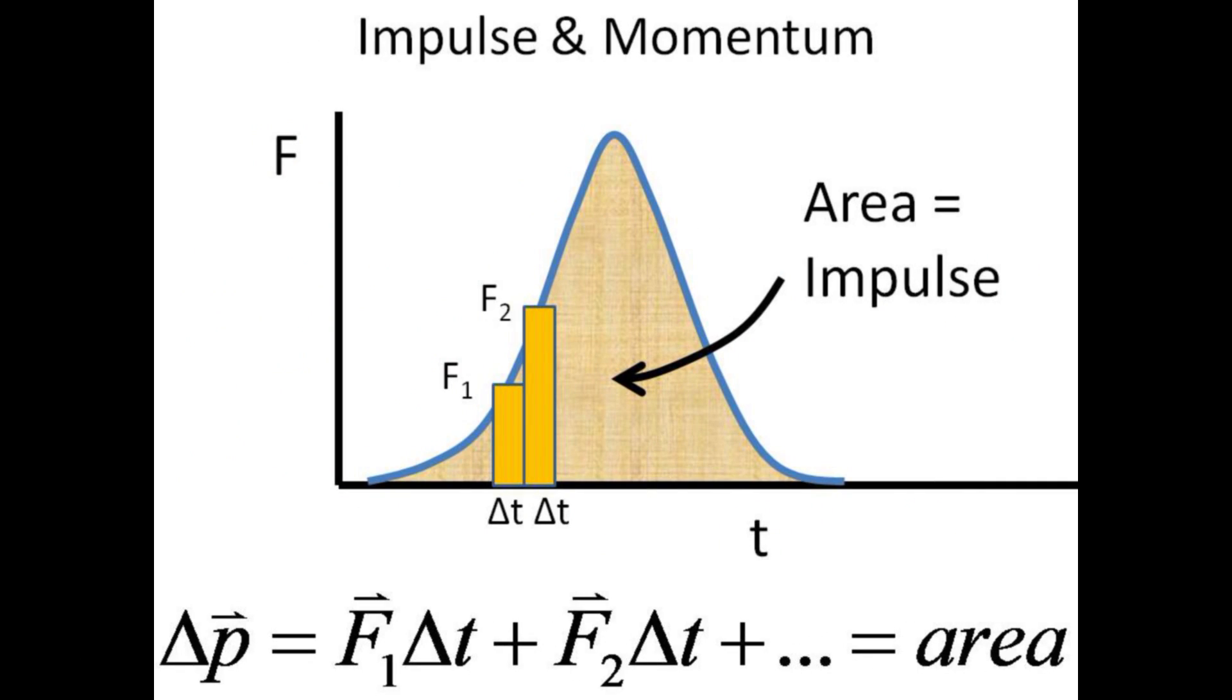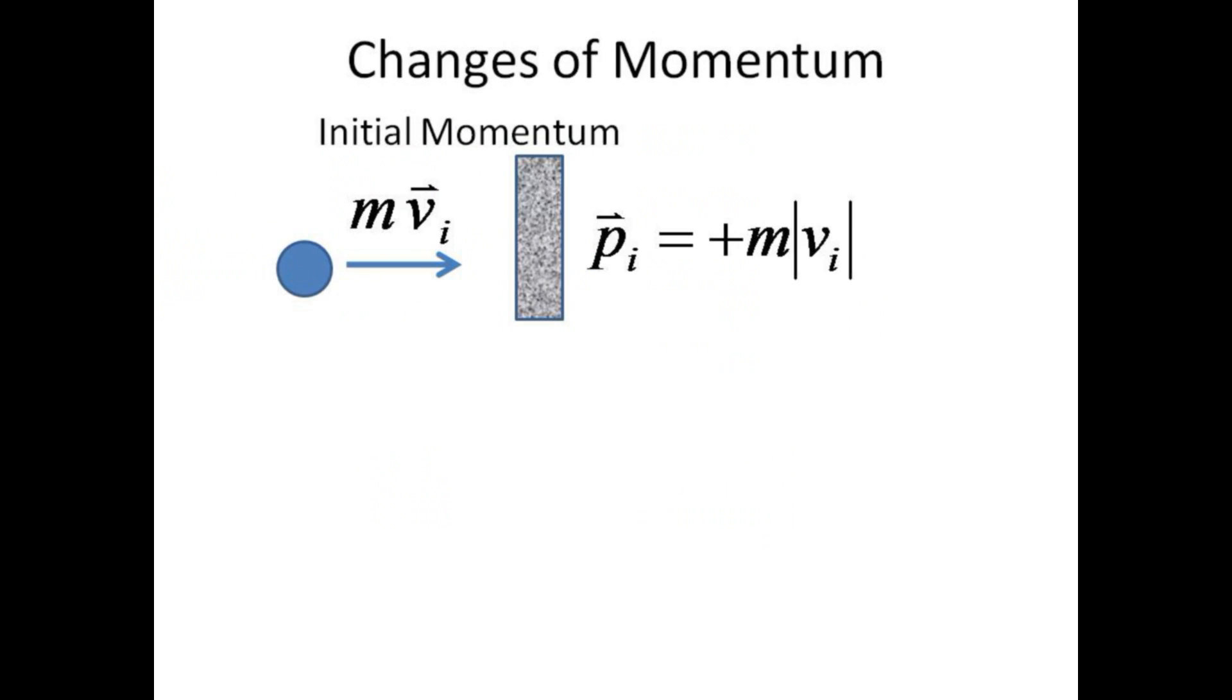This is still true even if the force varies over the time interval. Just break the area up into small rectangles of impulse F1 delta t, F2 delta t, etc., until the entire area is covered. Once again, we see that the change in momentum is equal to the area under a force versus time curve.